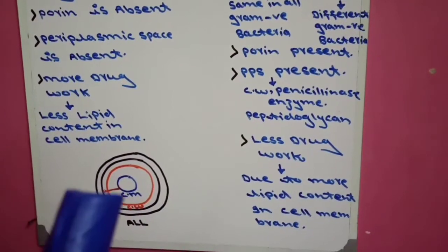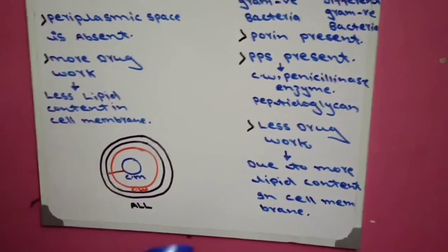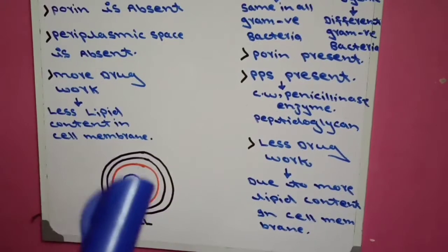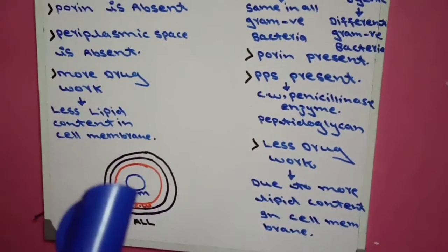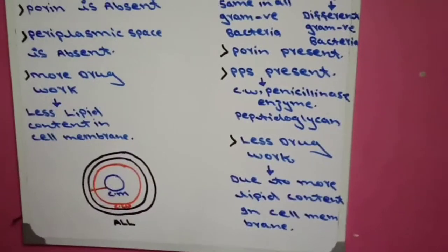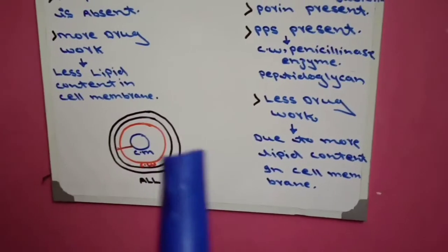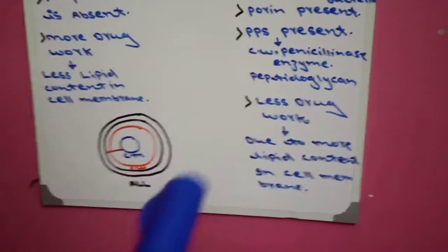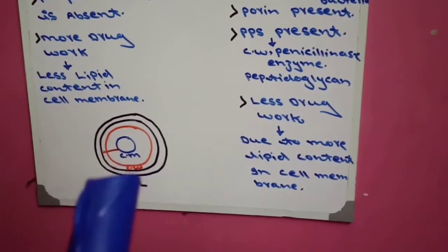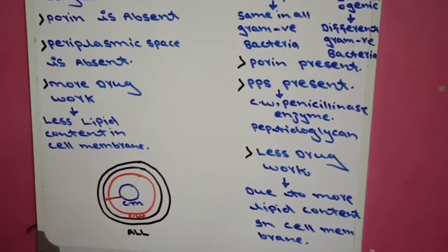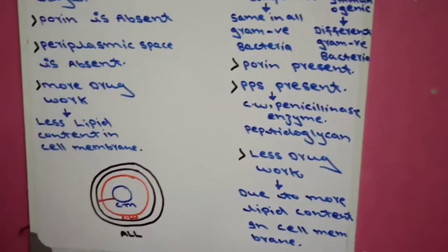In gram positive bacteria, only the cell membrane and cell wall are present with no additional lipid layer, so drugs pass through the cell wall, enter the cell membrane — which has less lipid — and reach the DNA easily. In gram negative bacteria, the additional lipid layer acts as a barrier, and the cell membrane has more lipid content, creating more resistance. Therefore, less drugs work on gram negative bacteria and more drugs work on gram positive bacteria.